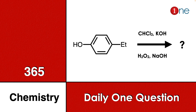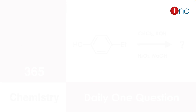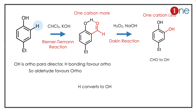Welcome to One Chemistry. This is the 365 Chemistry Series — daily one question for you. Here, benzene is given with an alcohol and para substituent. You have ethyl. You are reacting with chloroform and potassium hydroxide, and then hydrogen peroxide and sodium hydroxide. You have to find what will be the final product. The answer lies in two named reactions.